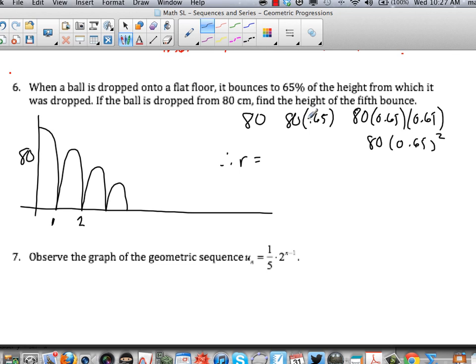0.65. So if I divide the second term by the first term, I'm going to get 0.65. If I divide the third term by the second term, I'm going to get 0.65. That's my common ratio.